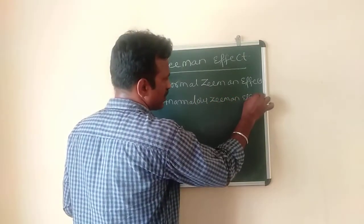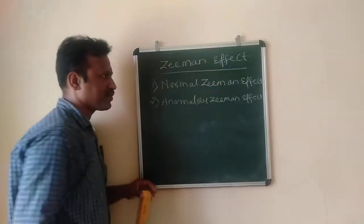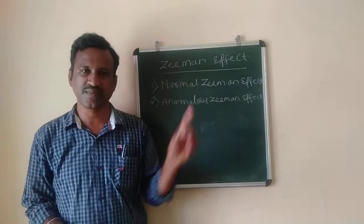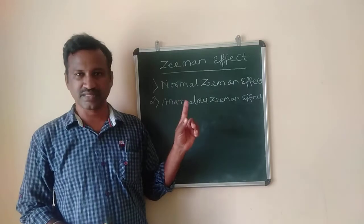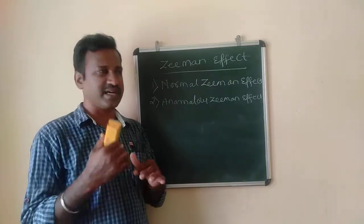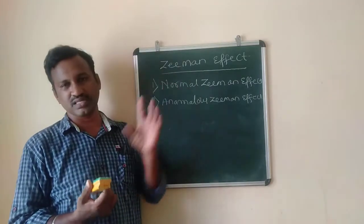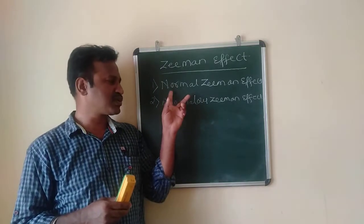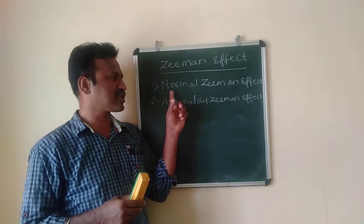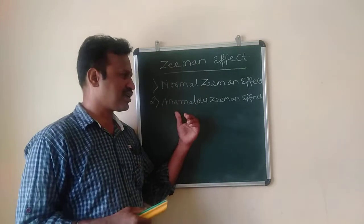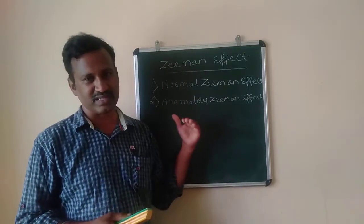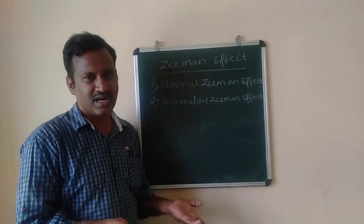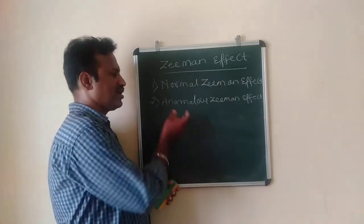There are two types of Zeeman effect. The Zeeman effect is nothing but the splitting up of spectral lines in the presence of an external magnetic field. Zeeman effect is classified into two types: one is normal Zeeman effect and the other is anomalous Zeeman effect. The word anomalous itself reflects something unusual — that which is not normal.